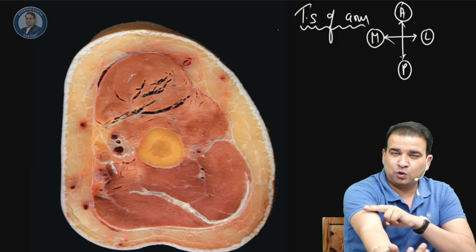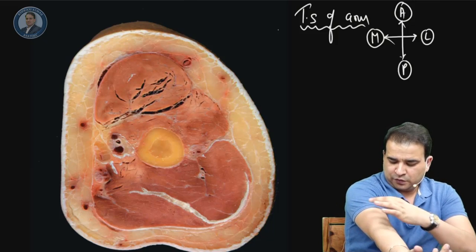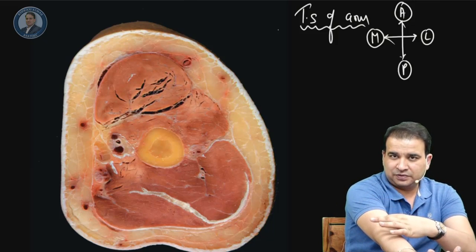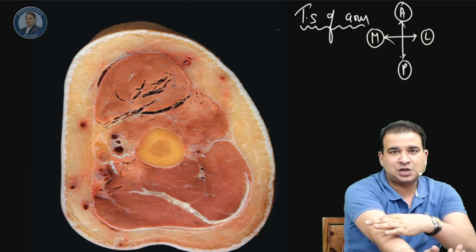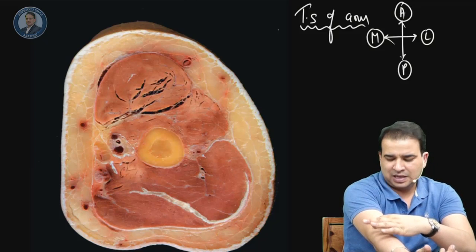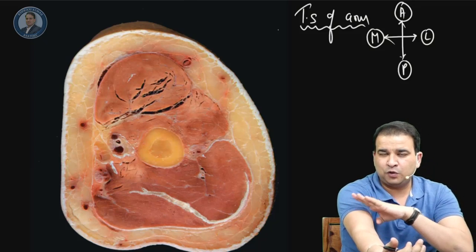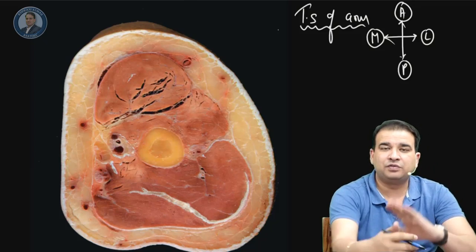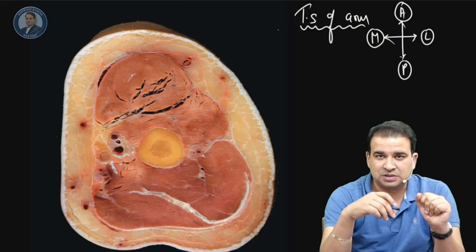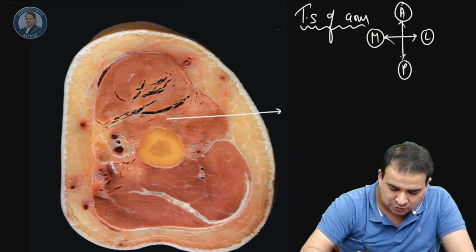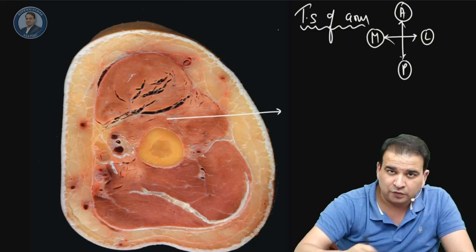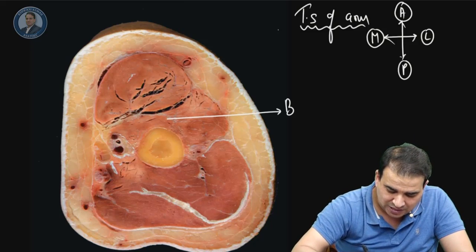The brachialis muscle originates from the anterior-lateral and anterior-medial surface of the shaft of the humerus, specifically from the lower half of the shaft. So this muscle you're looking at, which is originating from the humerus here, is the brachialis muscle.